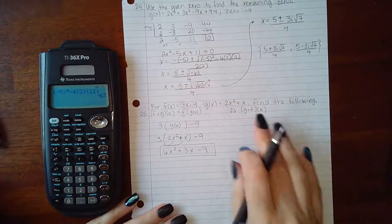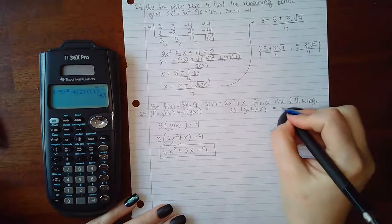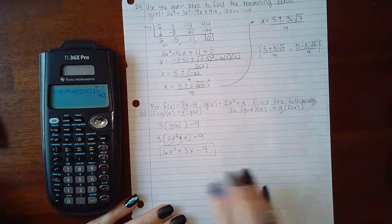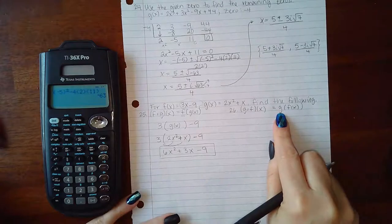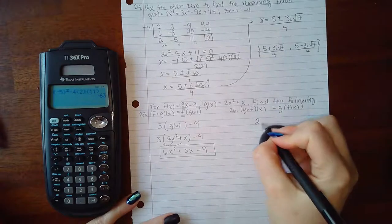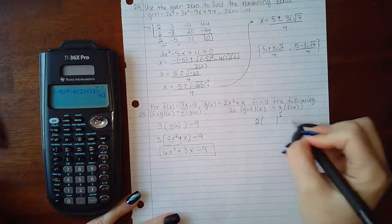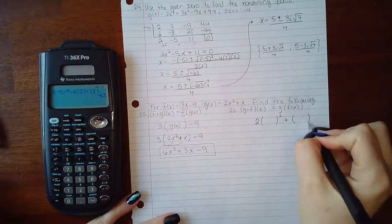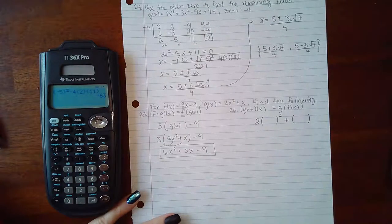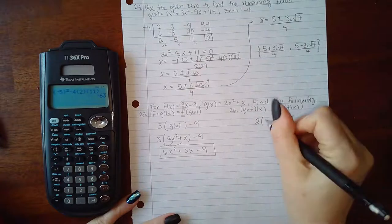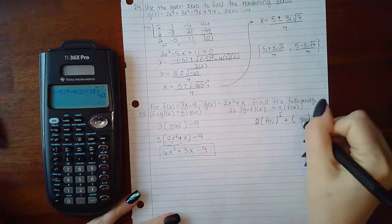Now for 26 this is rewritten as g of f of x. So notice g is on the outside now. So what I'm going to do is write the g function but instead of plugging in x I'm going to leave a big empty parentheses. And then what's inside that parentheses should be f of x.